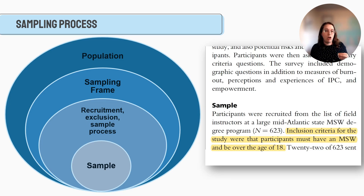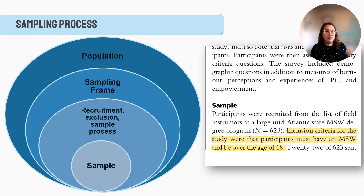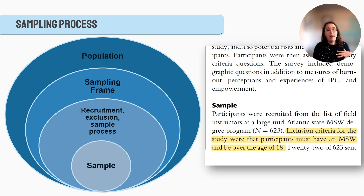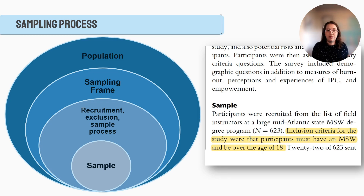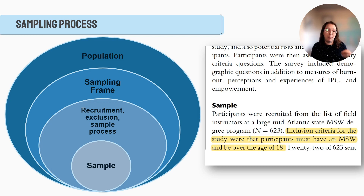Here's an example from McCarthy, who looked at the relationship between burnout and perceptions of interprofessional collaboration. The sampling frame was a list of field instructors at a large mid-Atlantic MSW degree program. They weren't able to survey every field instructor across the US, but they had a master list of 623 field instructors. Inclusion criteria required participants to have an MSW and be over 18, and then they sent out surveys and received responses.